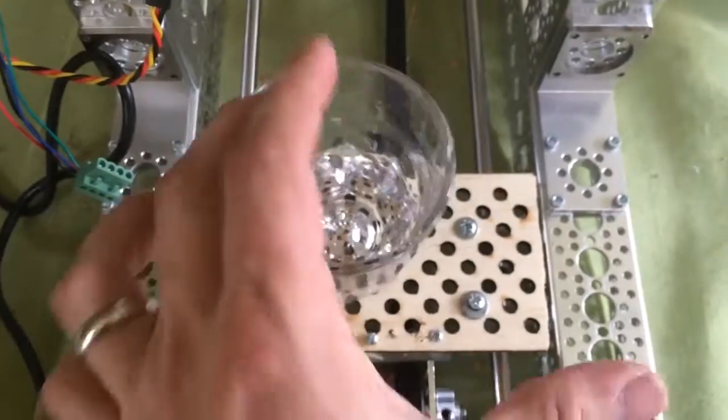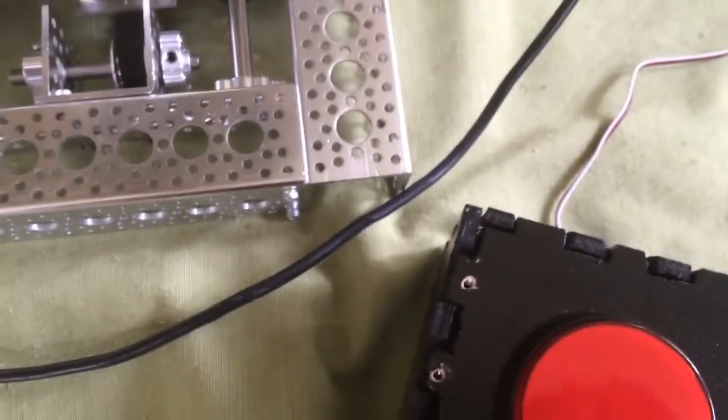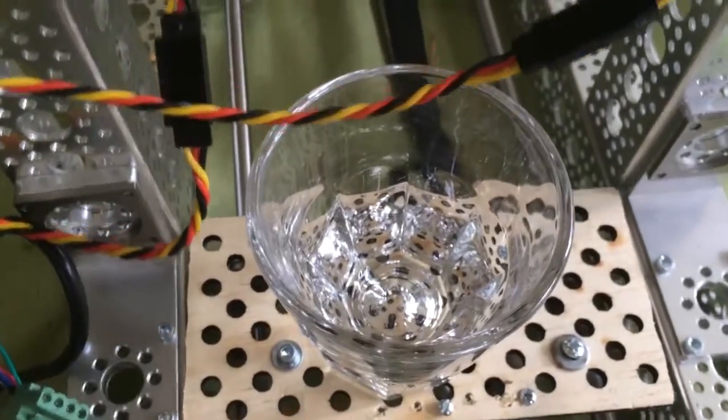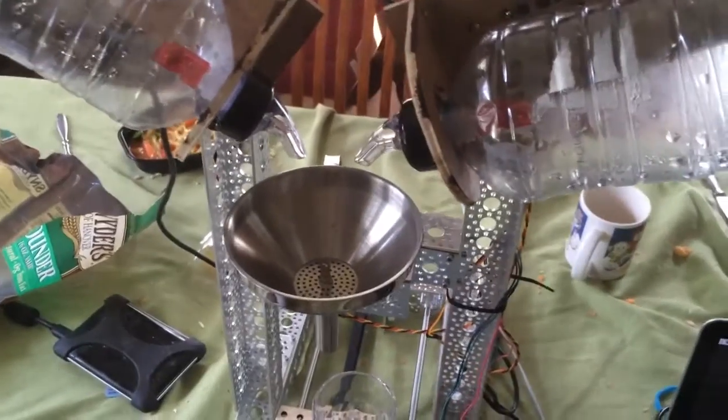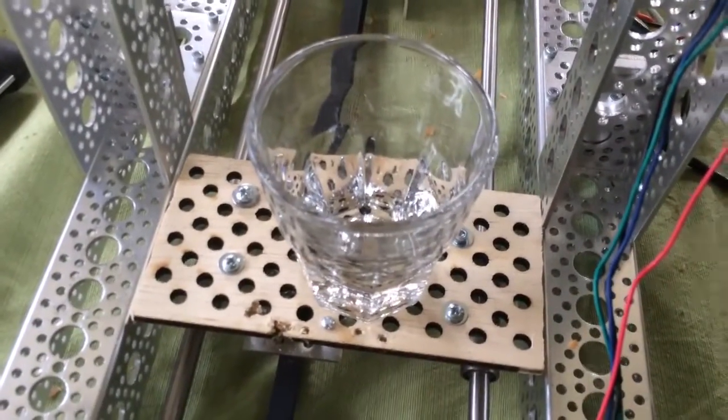The first step is to place a glass on the platform, and then you hit the button. The glass goes into the machine. The bottles pour into the funnel, which pours into the glass, and there's your beverage.